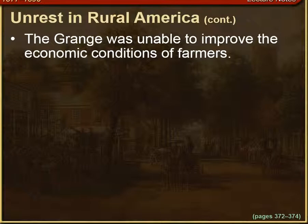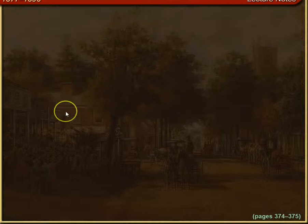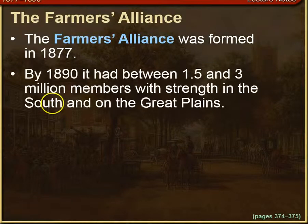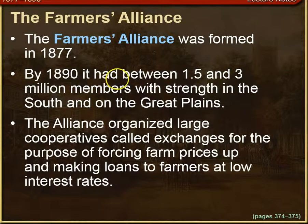The Grange was unable to improve economic conditions for farmers, though. By the late 1870s, many farmers had left the Grange and joined other organizations. In 1877, the Farmers' Alliance was formed. By 1890, it had between one and a half and three million members, with strength in the South and the Great Plains. The Alliance organized large co-ops called exchanges to force farm prices up and make loans to farmers at low interest rates.